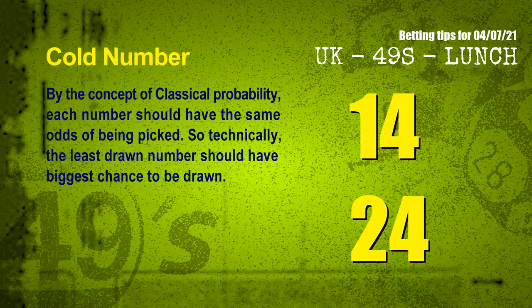In the end of this video, we have two more tips for you: cold numbers and overdue numbers. By the concept of classical probability, each number should have the same odds of being picked, so the least drawn number should have the biggest chance to be drawn. After counting thousands of results, the coldest two numbers for next draw are 14 and 24.